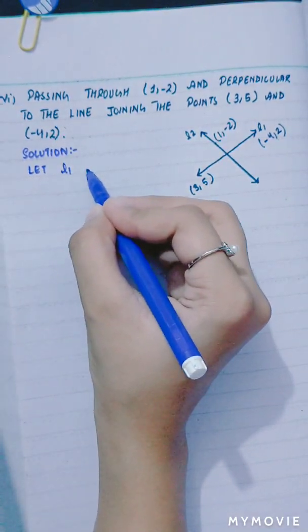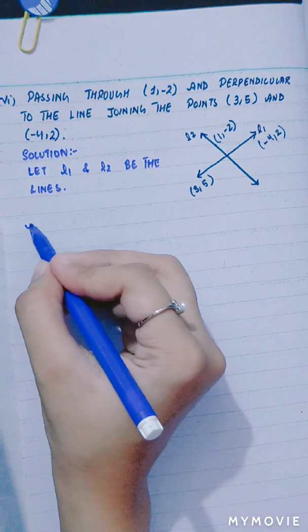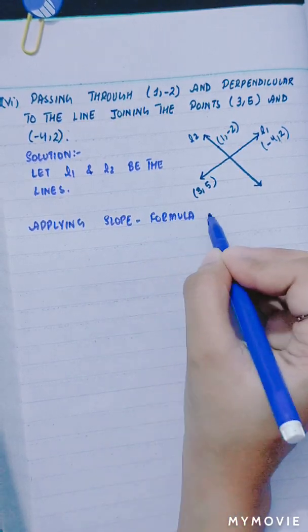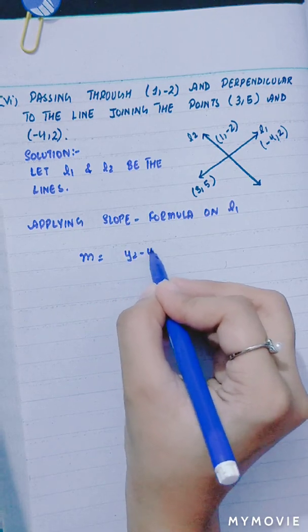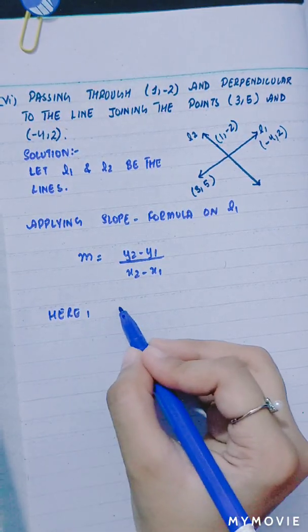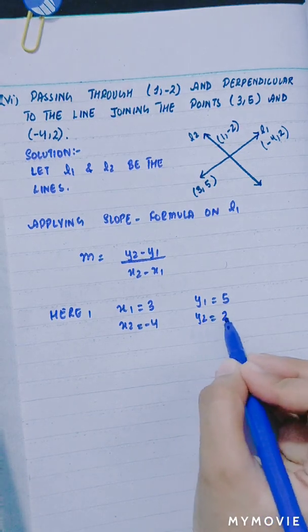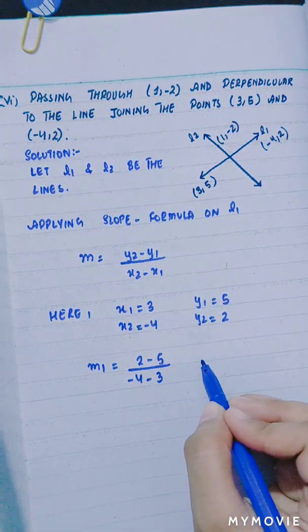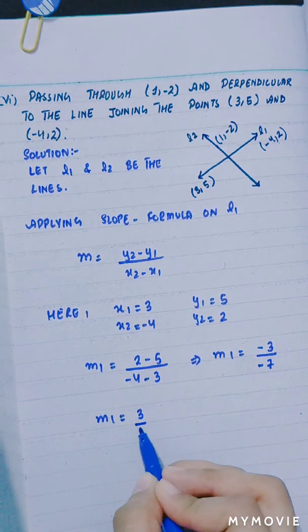Let L1 and L2 be the lines. Applying the slope formula on L1: M is equal to y2 minus y1 divided by x2 minus x1. Here x1 is 3, y1 is 5, x2 is minus 4, and y2 is 2. M1 is equal to 2 minus 5 divided by minus 4 minus 3, giving minus 3 over minus 7, so M1 equals 3 over 7.